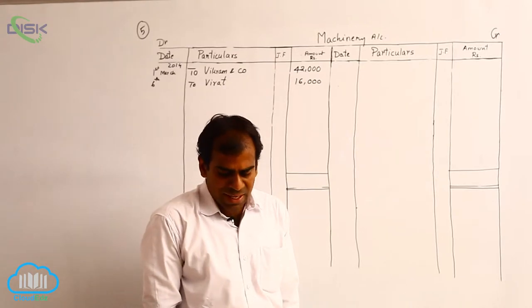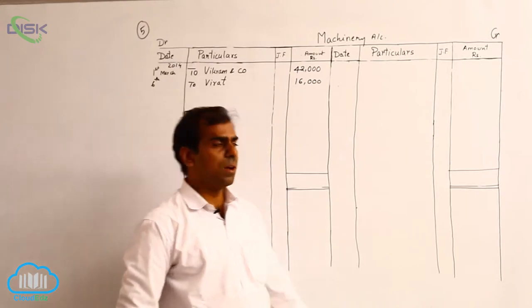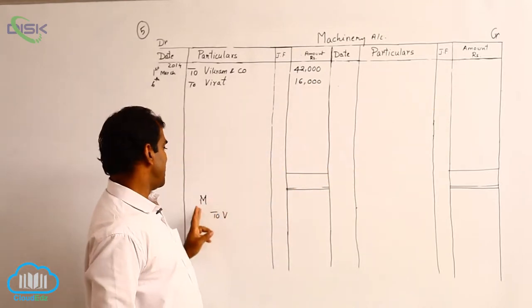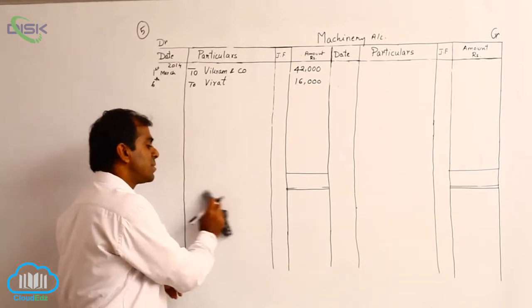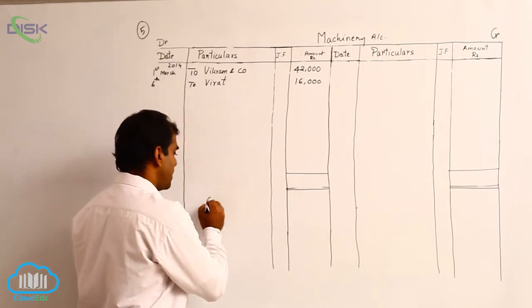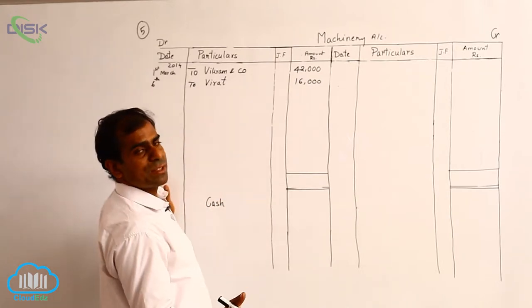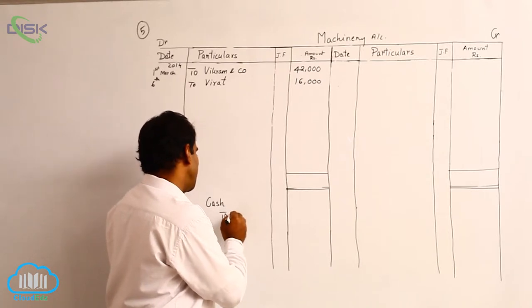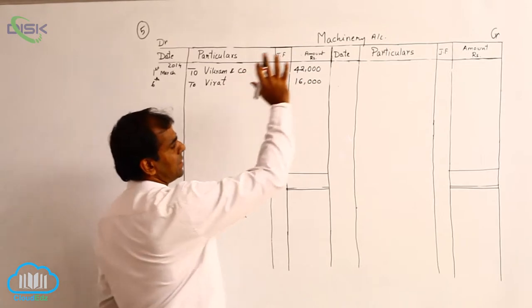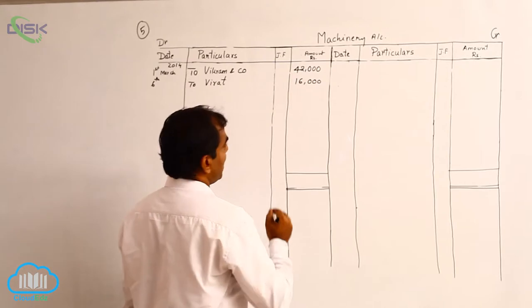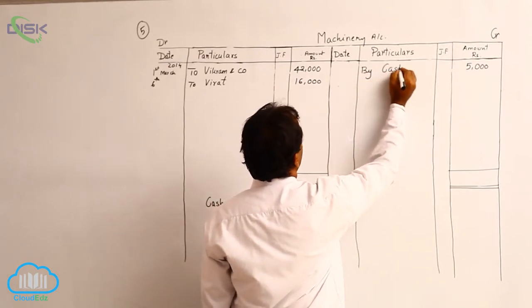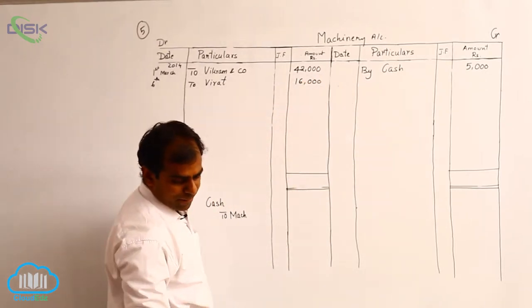On 12th March, machinery costing ₹8,000 was sold for ₹5,000. When machinery is sold, it is going out, so being a real account, we credit it. The entry is: Cash Account debit, Machinery Account credit. We receive ₹5,000 cash, so we enter ₹5,000 on the credit side with the reason 'cash' and date 12th.